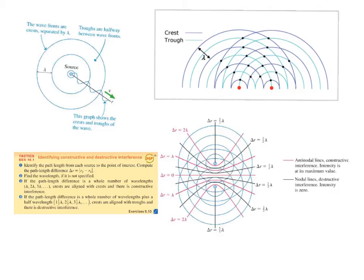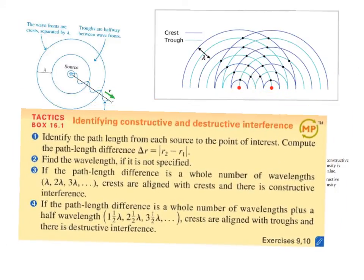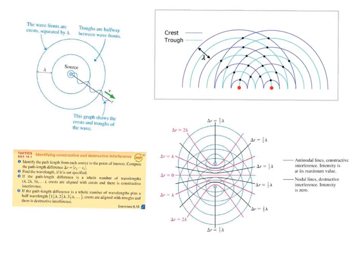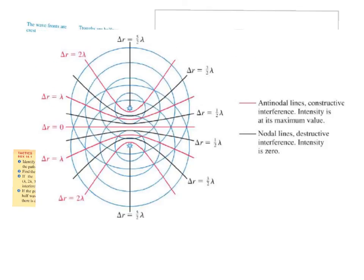The treatment we have seen for sound waves can be applied to any wave. For any two wave sources, a tactics box sums up how to determine if the interference at a point is constructive or destructive. When looking at specific points, we can line those up to get antinodal lines and nodal lines. Antinodal lines are lines where any point along them gives constructive interference, so intensity is at its maximum value. Nodal lines are lines of destructive interference, where intensity is zero at any point along those lines.